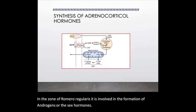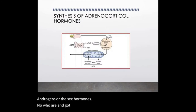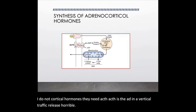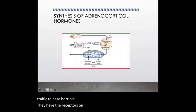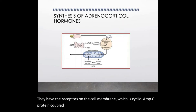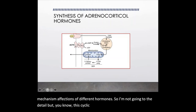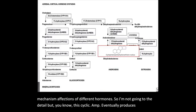How are adrenocortical hormones synthesized? They need ACTH, which is the adrenocorticotrophic hormone. ACTH has receptors on the cell membrane which are cyclic AMP G-protein coupled receptors. As you have already discussed the mechanism of actions of different hormones, cyclic AMP eventually produces protein kinase A.